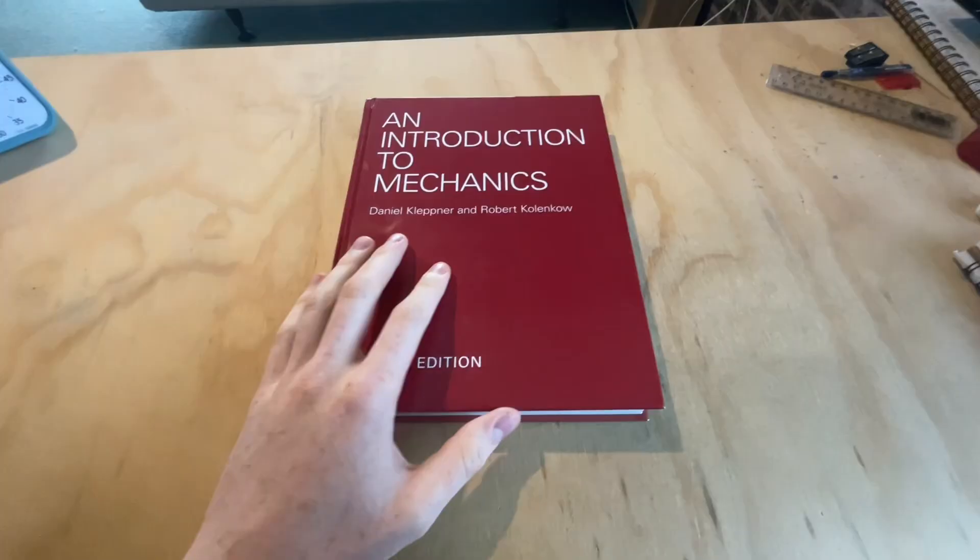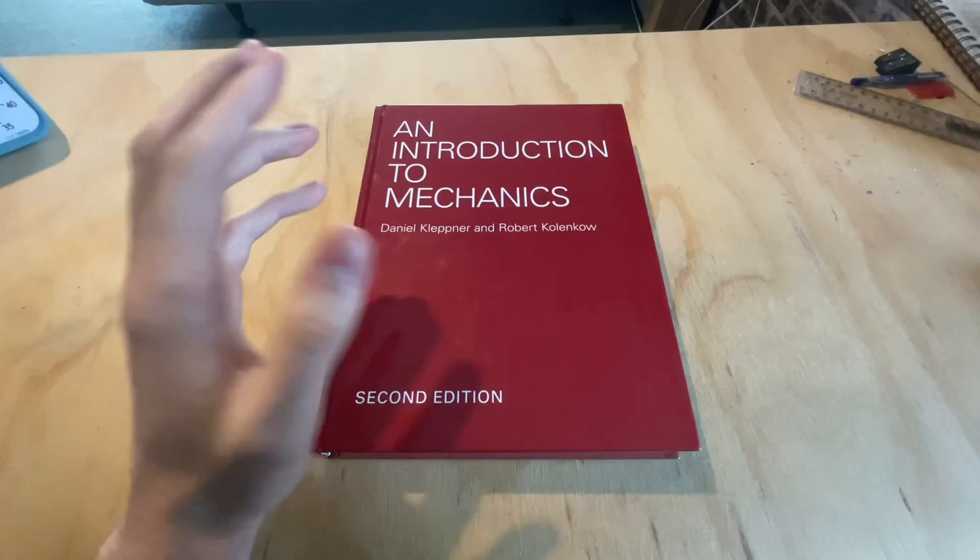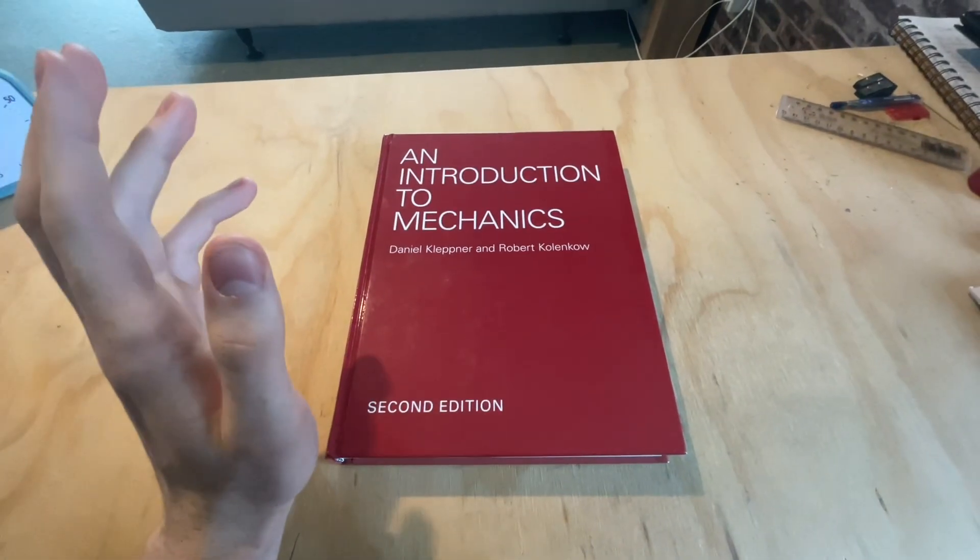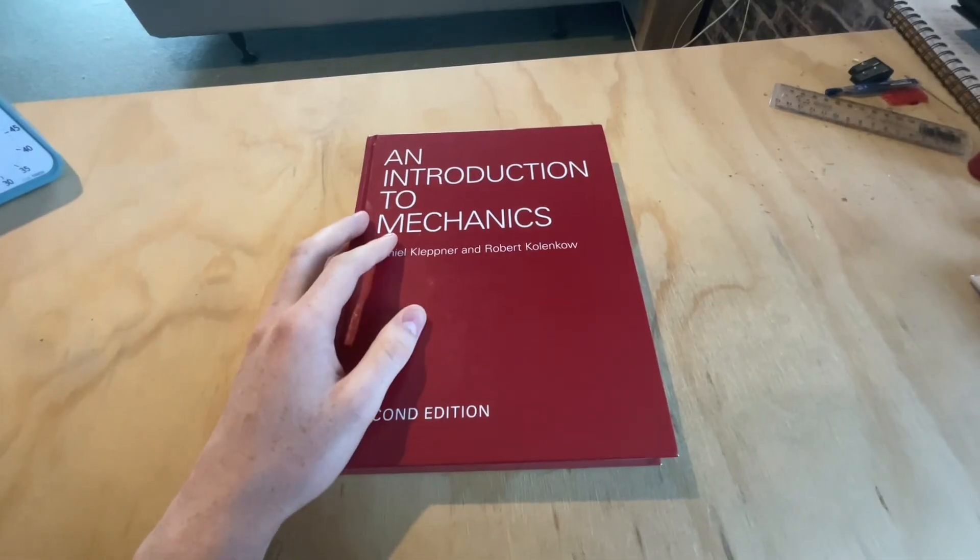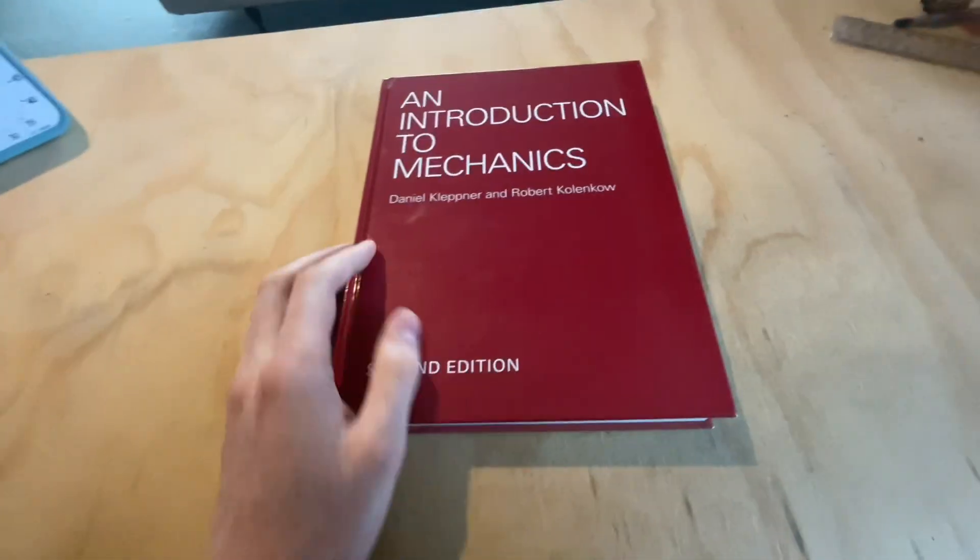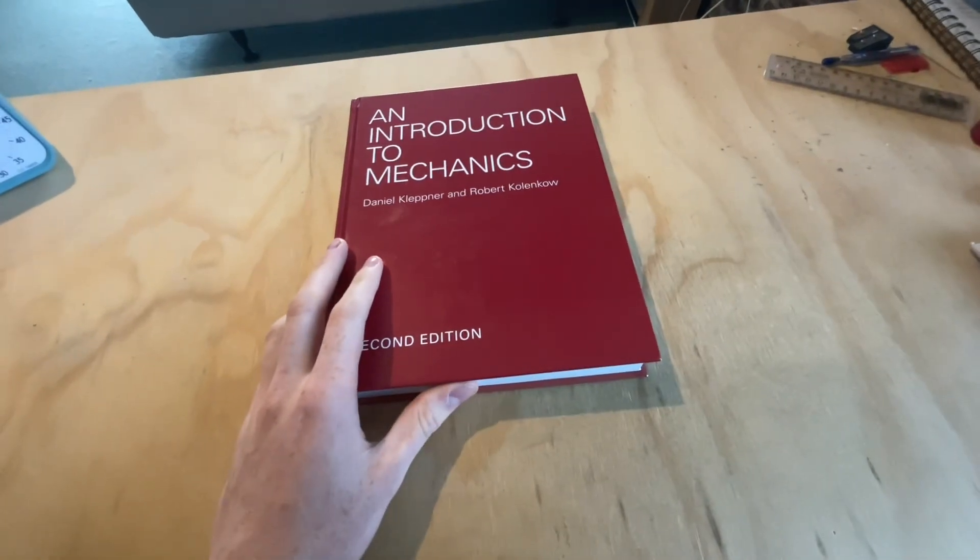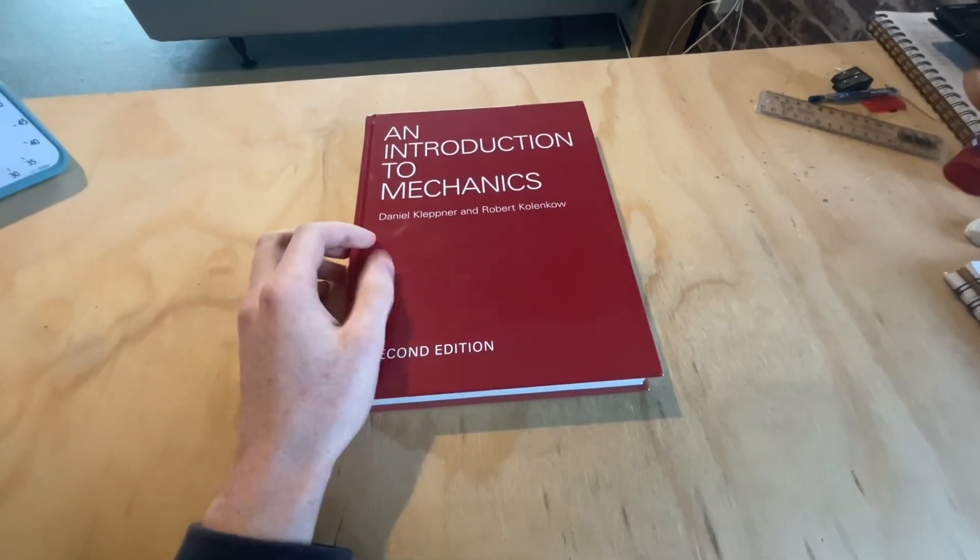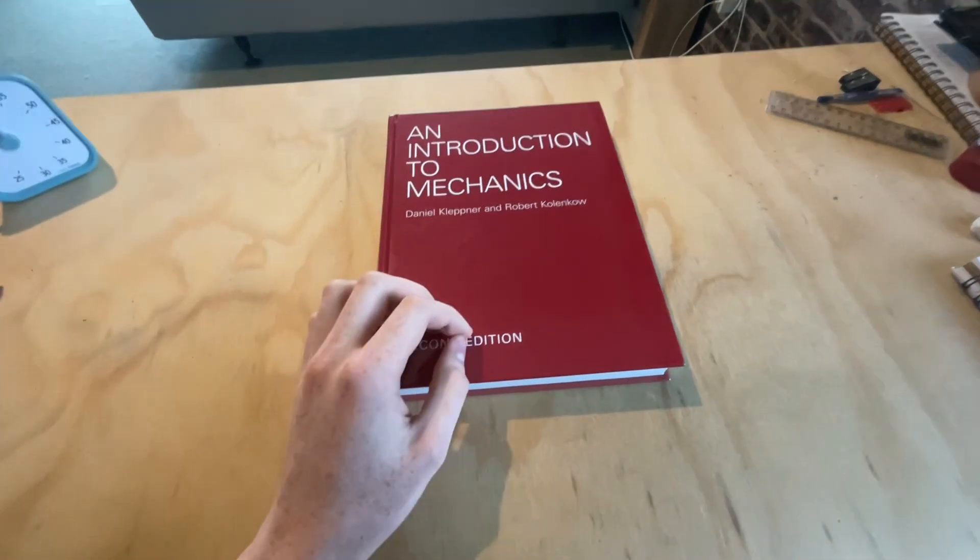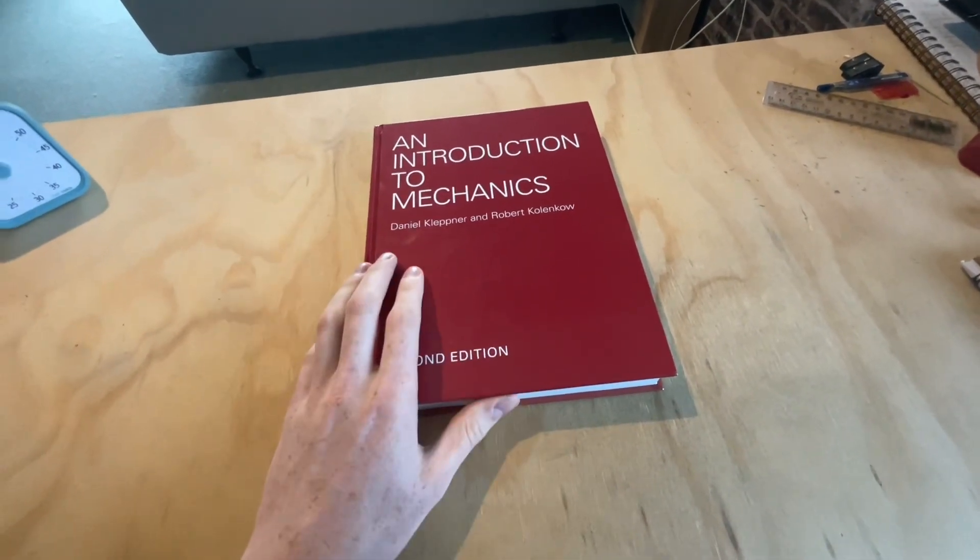So I've had requests to review this book, so getting right into it. This is meant to be an introduction book on classical mechanics. Now to my knowledge this book was used for a class in MIT, 8012 I think it is, and it's nicknamed Mechanics for Masochists. I can sort of understand why because this is meant to be an introduction book, as the title indicates, but I don't necessarily think this is an introduction book.